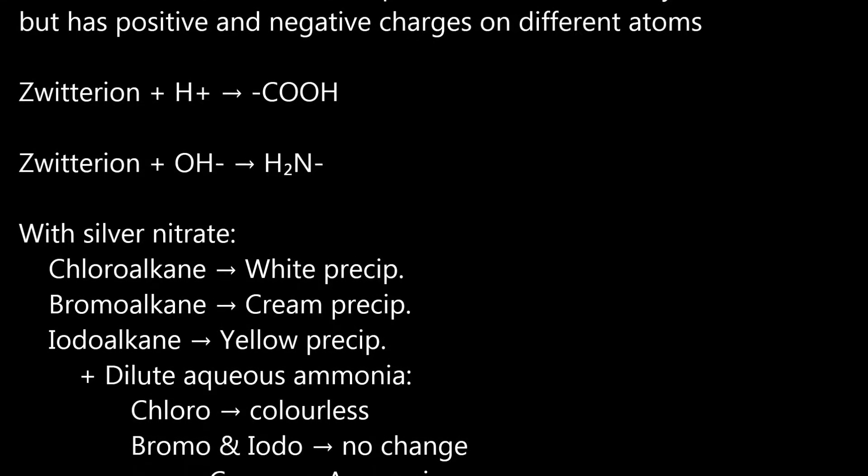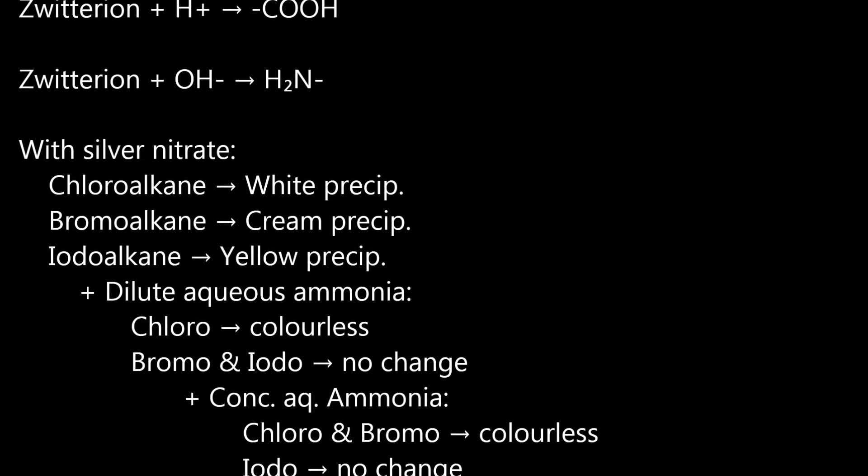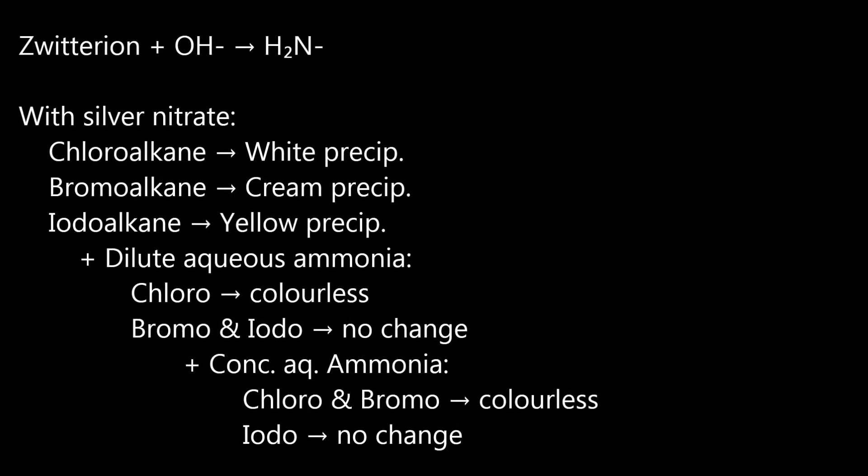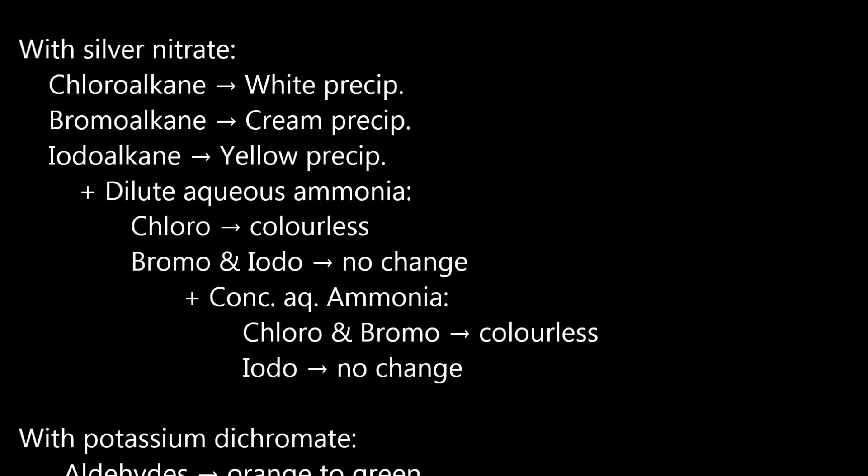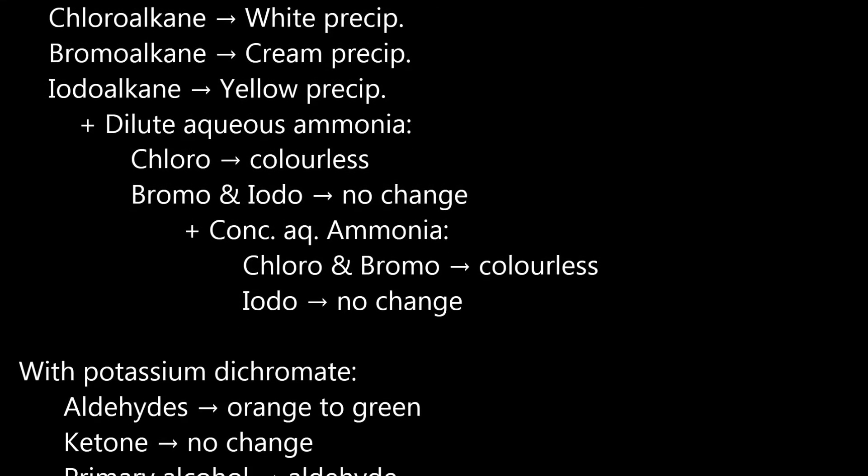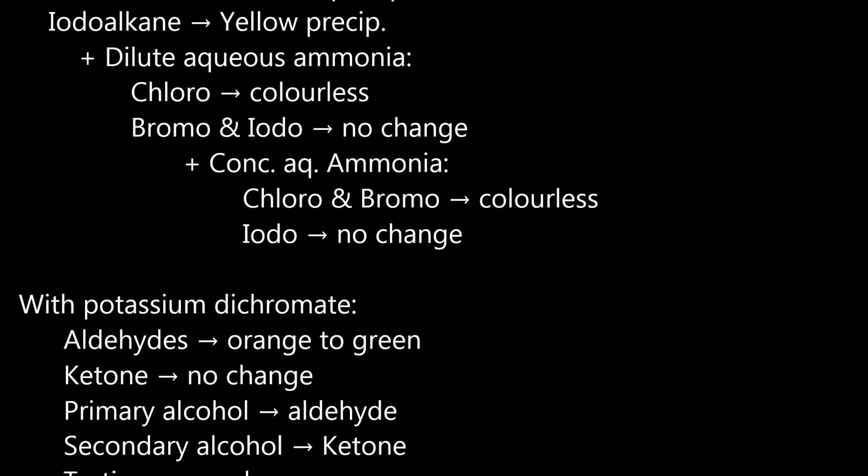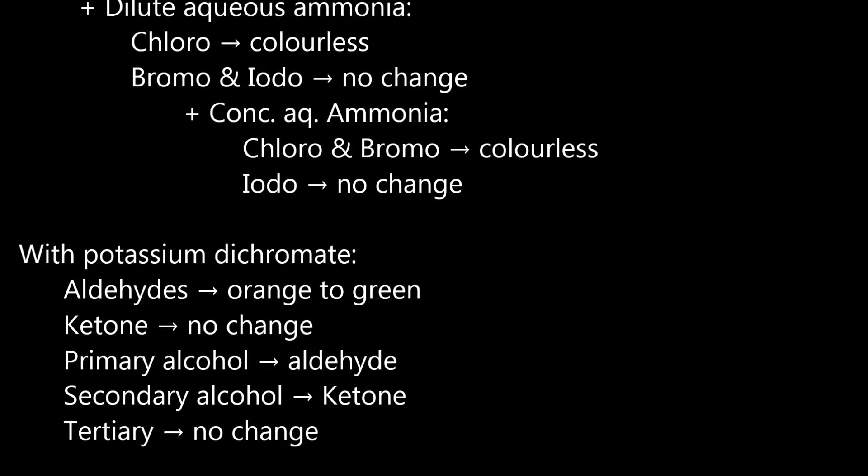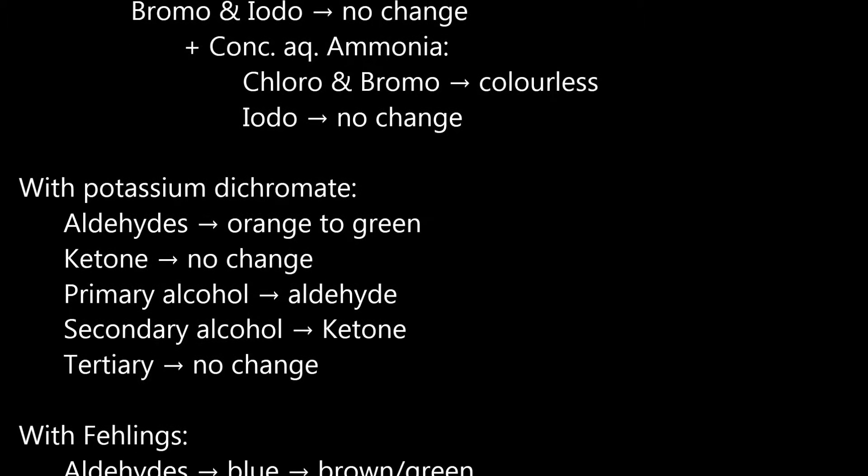With silver nitrate, chloroalkane goes to white precipitate, bromoalkane goes to cream precipitate, iodoalkane goes to yellow precipitate. Plus dilute aqueous ammonia, chloro goes to colorless, bromo and iodo go to no change. Plus concentrated aqueous ammonia, chloro and bromo go to colorless, iodo goes to no change.